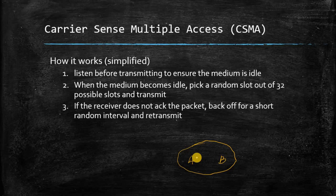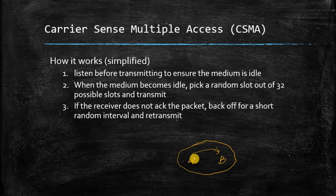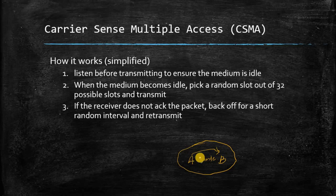If the receiver does not acknowledge, the sender backs off for a short random interval and retransmits. Whenever the medium is idle, it sends data and checks for acknowledgement. If acknowledgement is not received, it waits for a certain time and tries again. This is the simple CSMA protocol — it senses the wireless medium to check whether any other data is transmitting, and only sends if the medium is free.